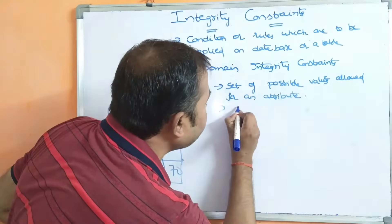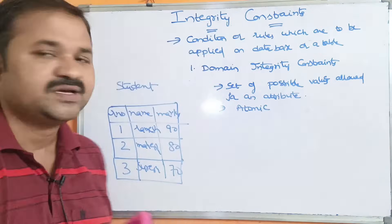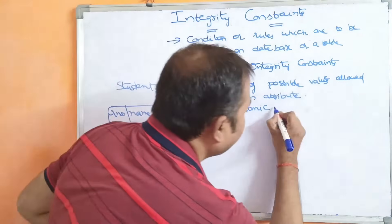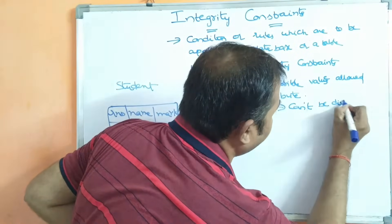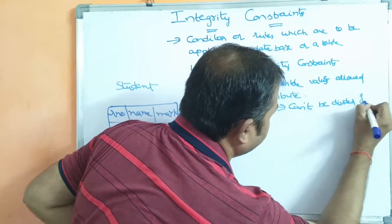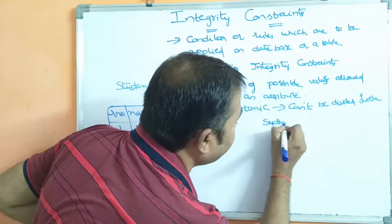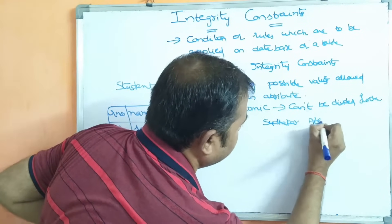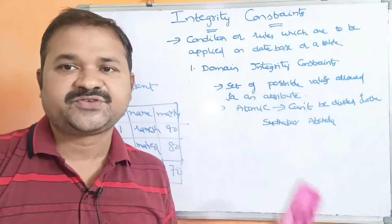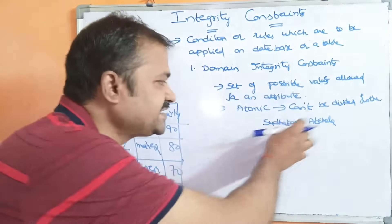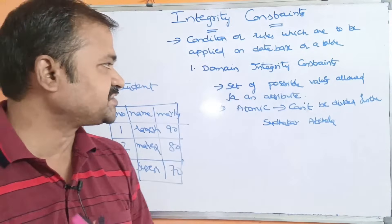Here, attribute value should be atomic, meaning it cannot be divided further. For example, if we have a name like 'Sudhakar Achala,' we can't divide this name further into two parts like 'Sudhakar' and 'Achala.' So this is called domain — the value cannot be divided further.